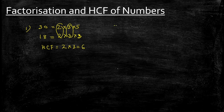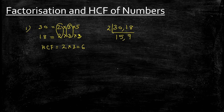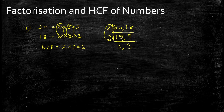Another way of finding this is the division method, where I divide with prime numbers. Dividing 30 and 18 by 2 gives 15 and 9; then dividing by 3 gives 5 and 3. I cannot divide further with the same number, so I stop here. The HCF is 2 × 3, which gives 6.